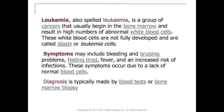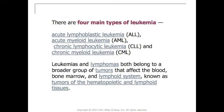Leukemia is a group of cancers that usually begin in the bone marrow and result in high numbers of abnormal white blood cells, which are not fully developed and are called blasts or leukemia cells. Symptoms may include bleeding and bruising problems, fatigue, fever, and an increased risk of infections. Diagnosis is typically made by blood tests or bone marrow biopsy. There are four main types: acute lymphoblastic leukemia, acute myeloid leukemia, chronic lymphocytic leukemia, and chronic myeloid leukemia. Leukemias and lymphomas both belong to a broader group known as tumors of the hematopoietic and lymphoid tissues. That concludes this evening's lecture.